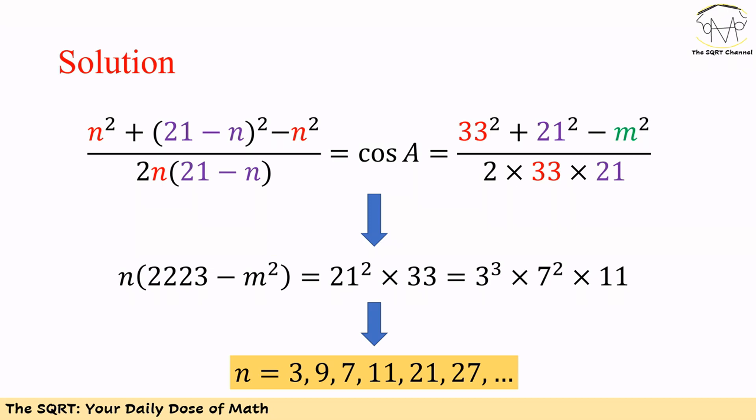Now we have cosine of A based on two equations, one has M and the other one has N. These two should be equal. If we do so and then simplify the equation, we are going to end up with N times (2223 - M²) is equal to 21² times 33.